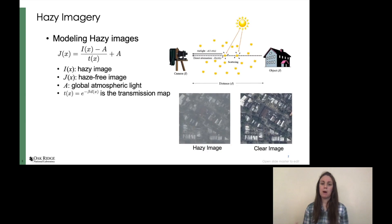So how do we model haze? Looking at the picture on the right, we see that there are particles in between the camera and the object that cause the light to scatter. This scattering causes the image to look hazy. Now moving to the equation, we see that in order to recover the clear image from the haze image, we need to estimate two things: atmospheric light, which is shown by A, and the transmission map, which is T. The transmission map represents the scattering that these particles are causing.